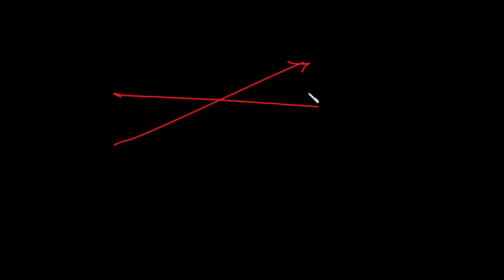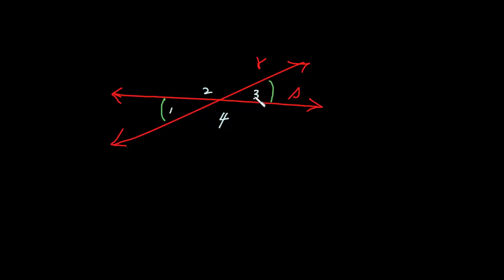Now let's cover one more set of pairs having to do with intersecting lines. Another set of pairs of angles — we have intersecting lines R and S, and again we'll number these angles to keep track of them: 1, 2, 3, and 4. Now here's the thing — let's talk about the angles that are across from each other. Angles 1 and angle 3, these two angles that are across from each other, are referred to as vertical angles. They must be formed by two intersecting lines. The angles that are across from each other share a common vertex, and those two angles are vertical angles.